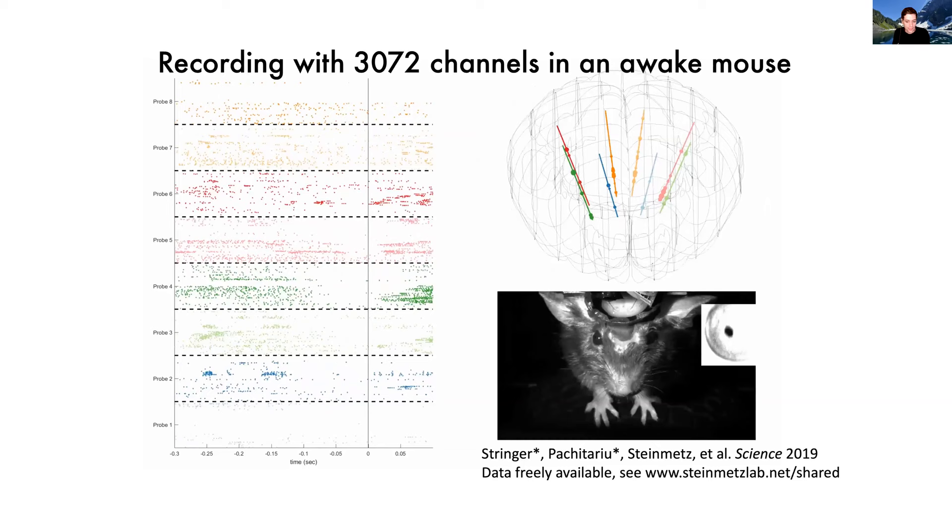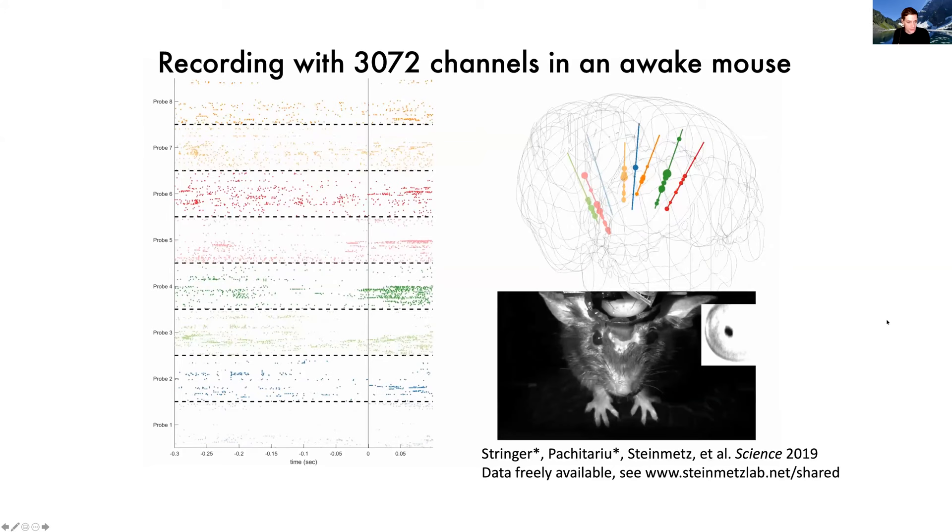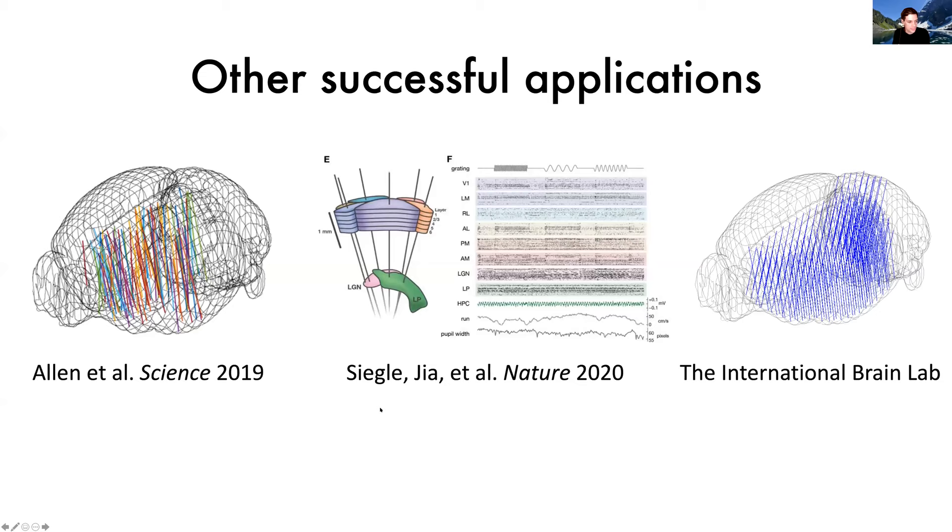We're not the only ones who have been able to use NeuroPixels to make recordings across the brain. I'm highlighting here a few different studies that have taken a similar approach. This one is from Will Allen in the Dicerath Lab paper a couple of years ago. This one is from the Allen Institute. Josh Siegel and Shashwan Ja are the first authors, where they recorded across the visual system, visual cortex, visual thalamus, and of course, hippocampus in between.